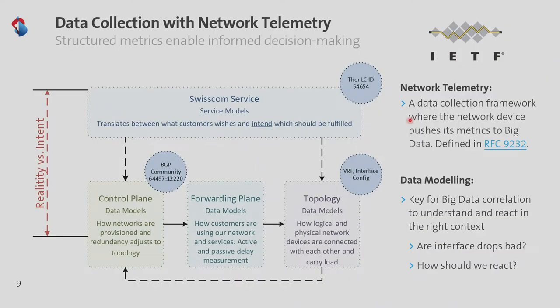It is very important to model the data correctly. At the top is our intent: we serve a Swisscom service, for example internet 100 megabit. We need to configure the service into the network — configure the right interfaces in the topology, set up the right peerings in the control plane, and finally the forwarding plane can flow. If you don't model the data, you start seeing drops and you wonder if they're good or bad. If I sell you 100 megabit and you try to push 200, I drop because there is a shaper — that's a good drop for us.